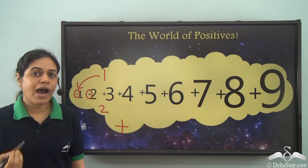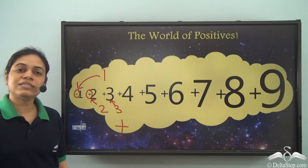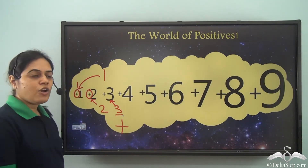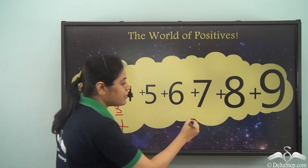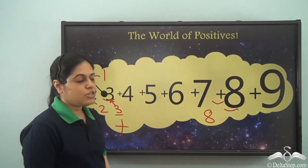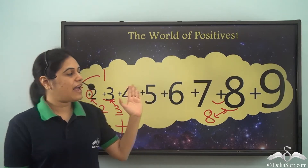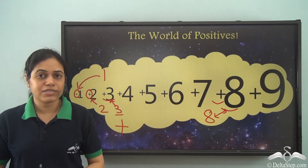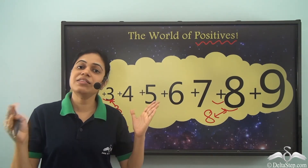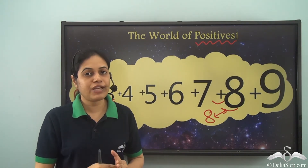Our number 2 is actually the same as positive 2. 3 is the same as positive 3, with a plus sign. So now I can call it 3 or I can call it positive 3. Take any number, say 8 — 8 is the same as positive 8. So all the numbers that we know have a positive sign hidden, and we can call them positive numbers. That is why it is called the world of positives — all the positive numbers are there in this world.